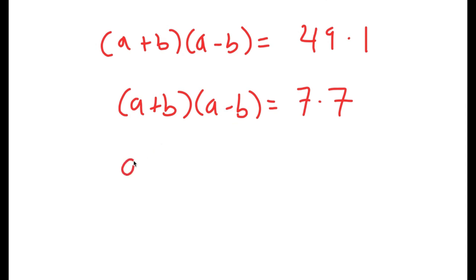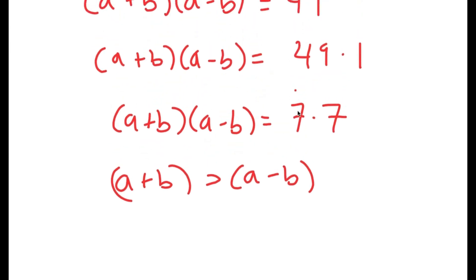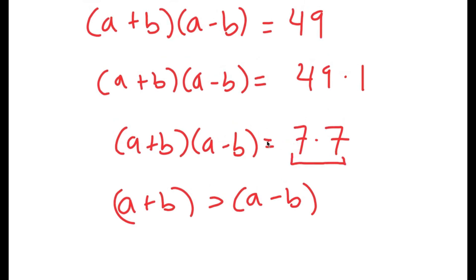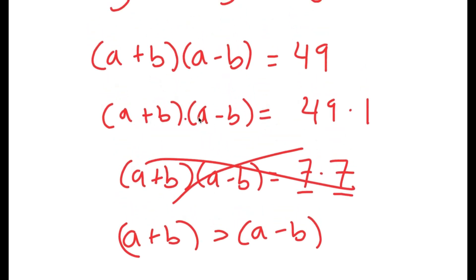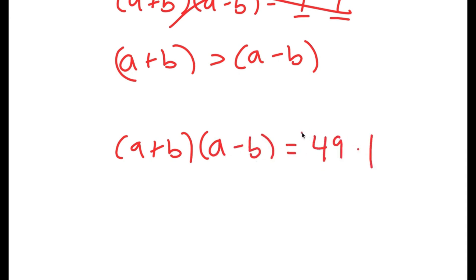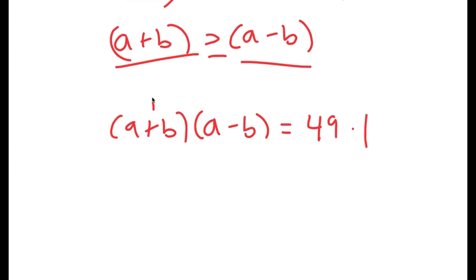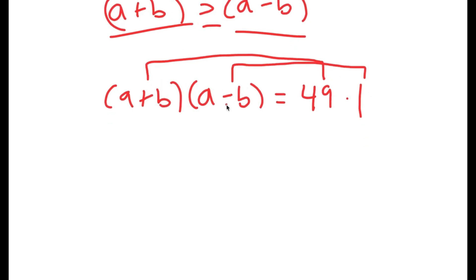We obviously know that a plus b is going to be greater than a minus b. So keeping this in mind, this means that we can't rewrite a plus b times a minus b as 7 times 7, as 7 and 7 are equal. So this possibility is out of the way, and 49 times 1 is the only possibility, meaning we're going back to a plus b times a minus b is equal to 49 times 1.